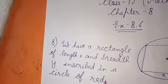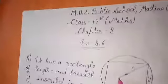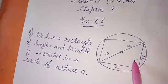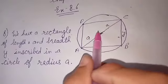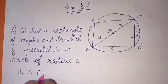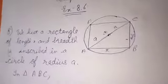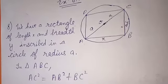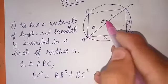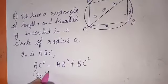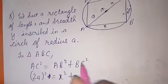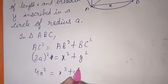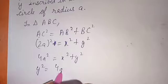We can name this rectangle as ABCD. In triangle ABCD, it is a right-angle triangle. So using Pythagoras theorem, AC² = AB² + BC². AC is the complete diagonal, that is AO + OC = A + A = 2A. So 2A squared equals X² + Y², giving us 4A² = X² + Y². Therefore Y² = 4A² − X², and Y = √(4A² − X²), which is positive since Y is a length.